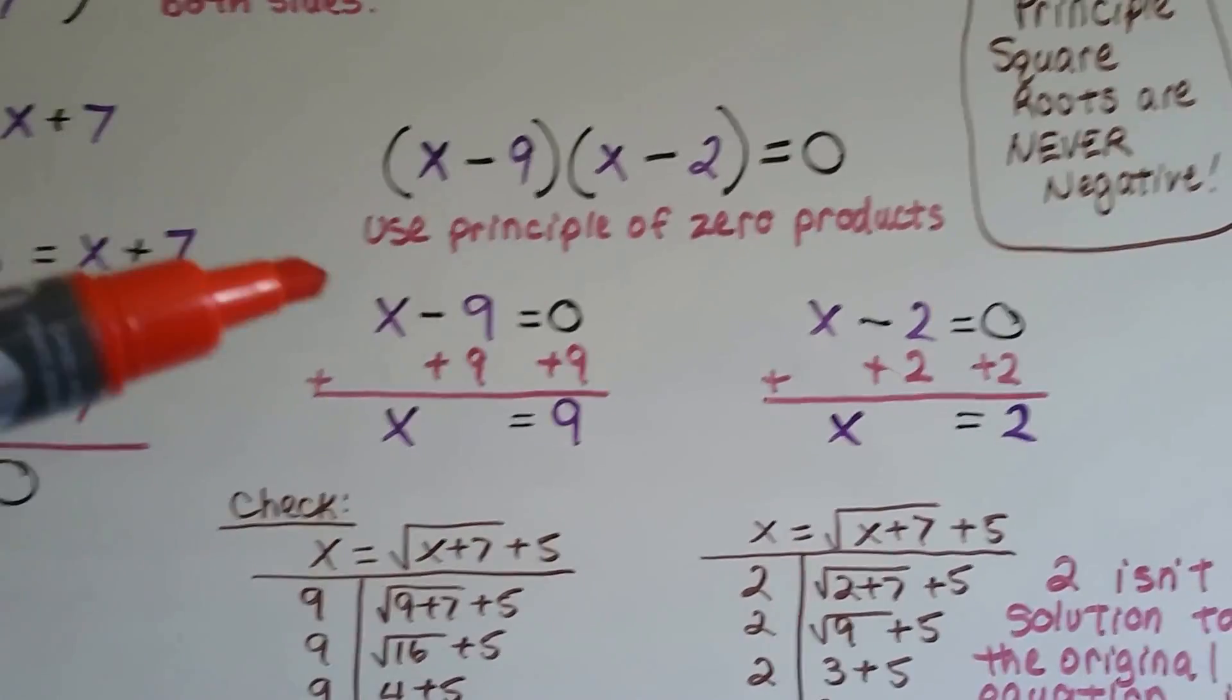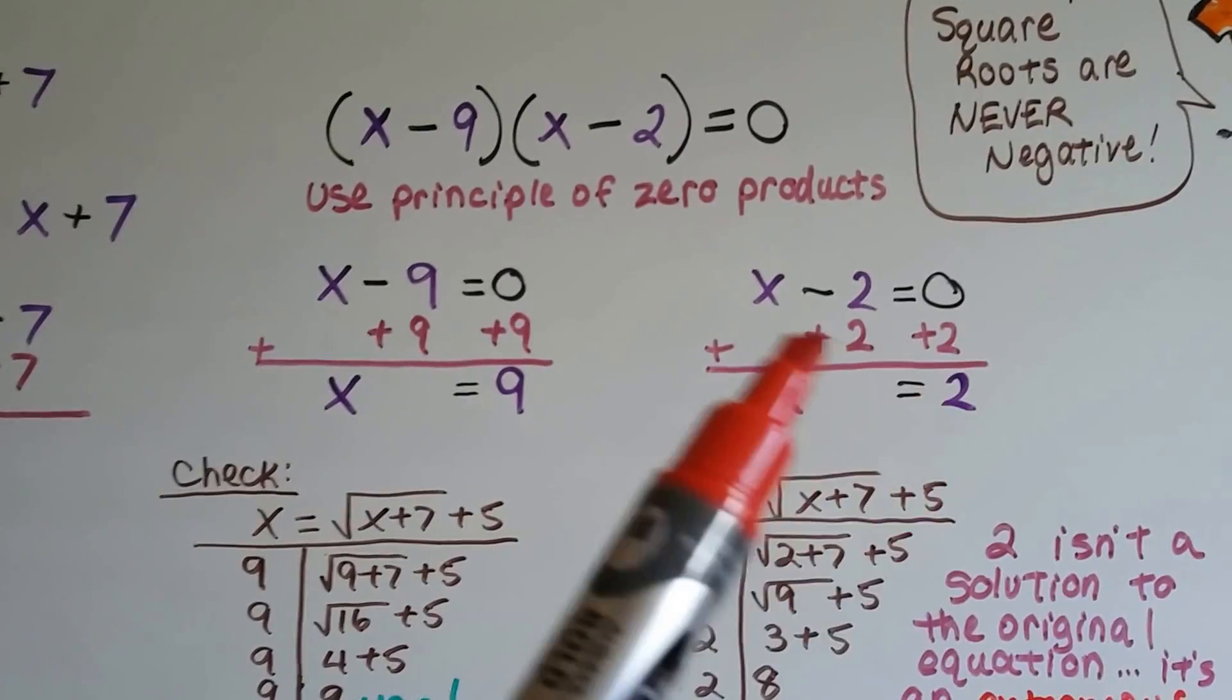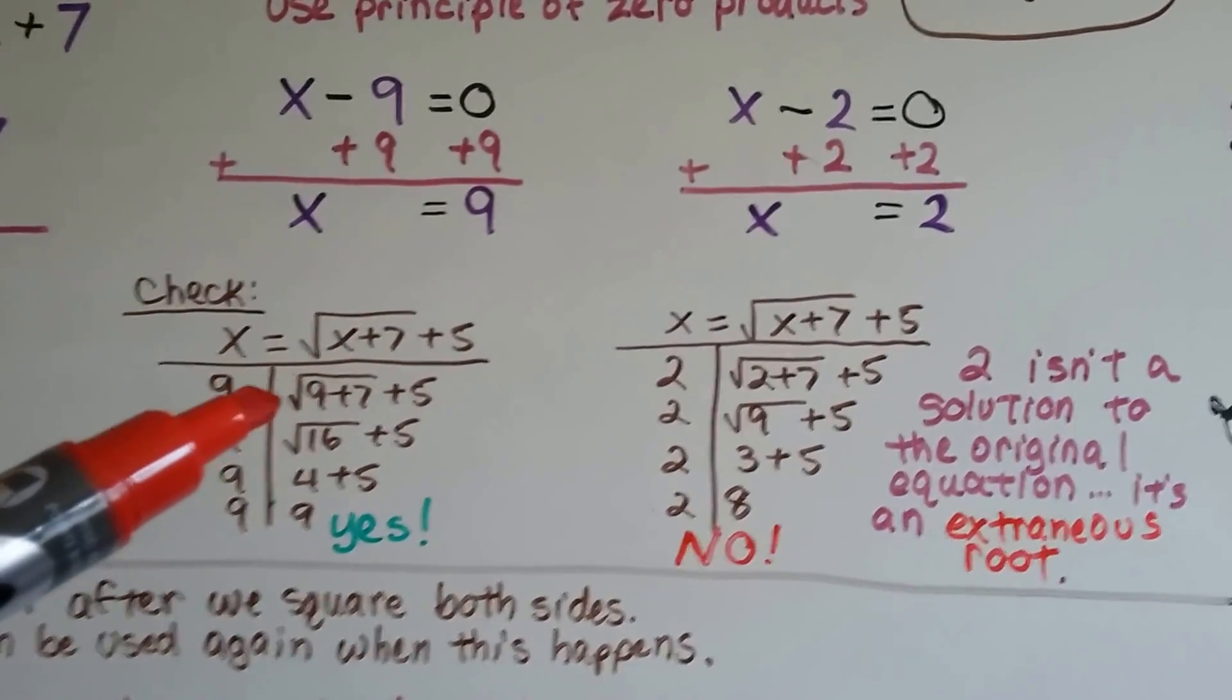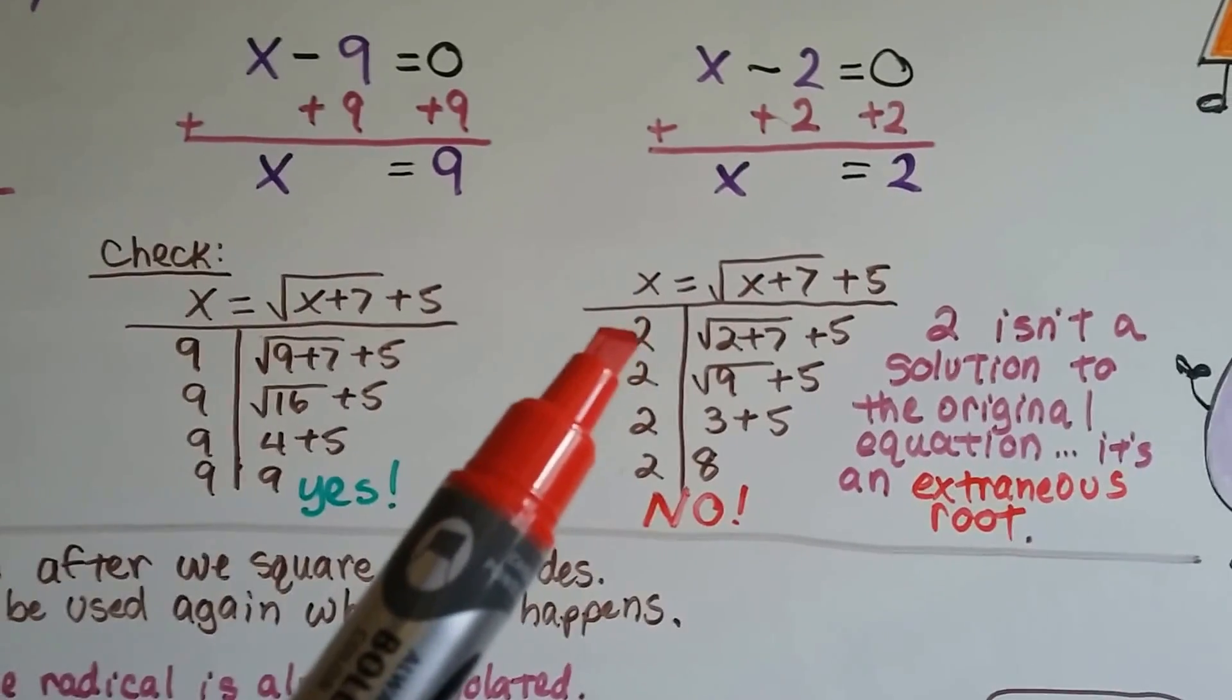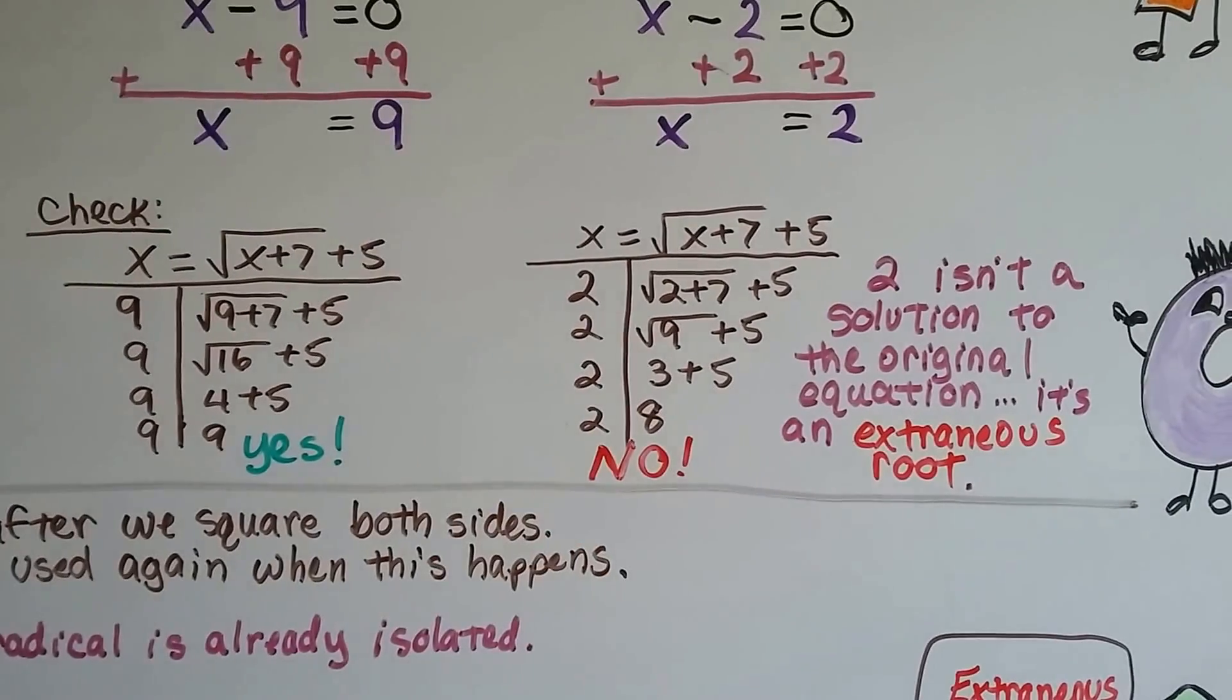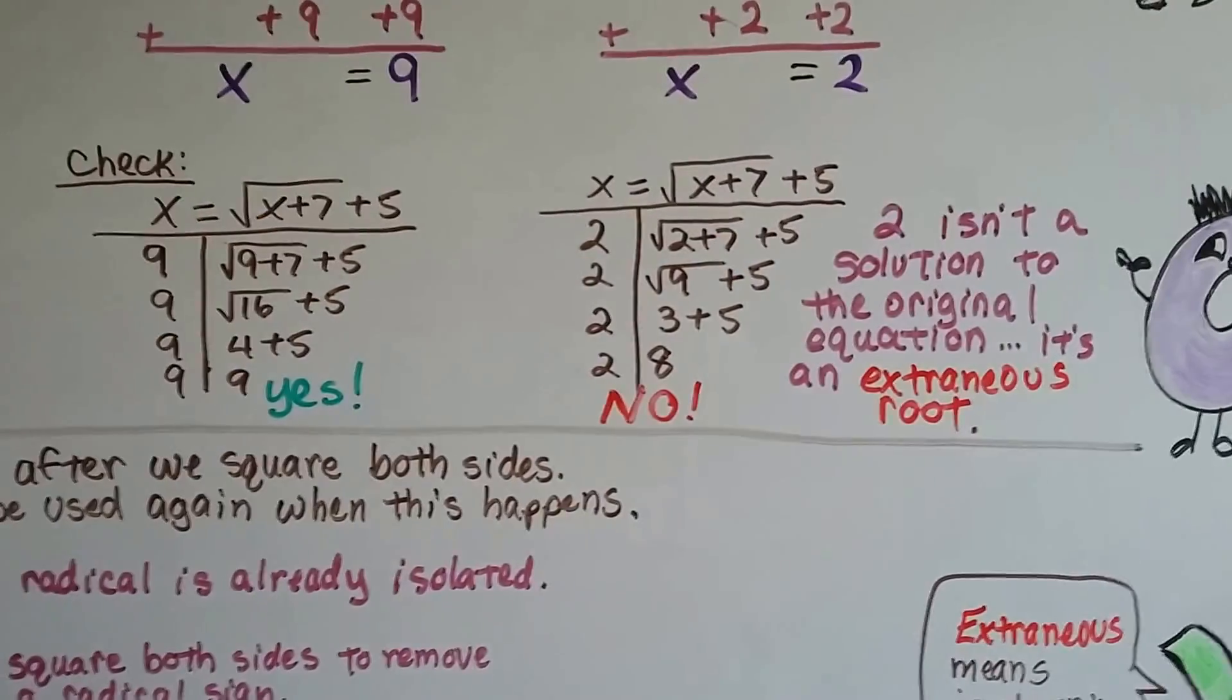For the x minus 9 equals zero, we can add 9 to each side of the equation, create a zero pair here, and get x equals 9. We do the same thing on this side. We add a 2 to each side, create a zero pair, and get x equals 2. Now we can check it and take our original equation and put 9 in wherever the x was, and we find out that yes, 9 equals 9. But on this side, when we put the 2 in and substitute it in, it isn't a solution to the equation. It's an extraneous root. We end up with 2 equals 8, and no, that can't happen. Extraneous means it's irrelevant or unrelated. So that's an extraneous root. That's not a solution. The 9 is. The 2 isn't.